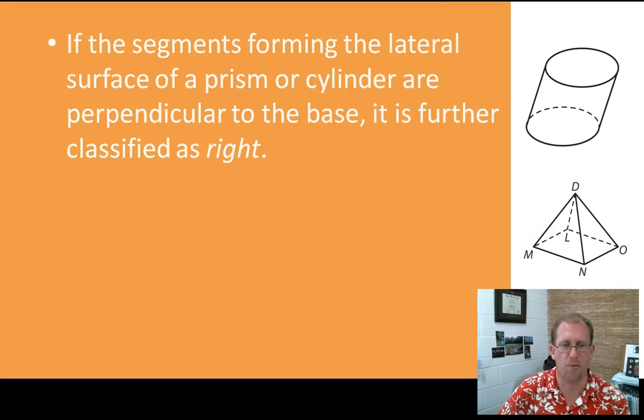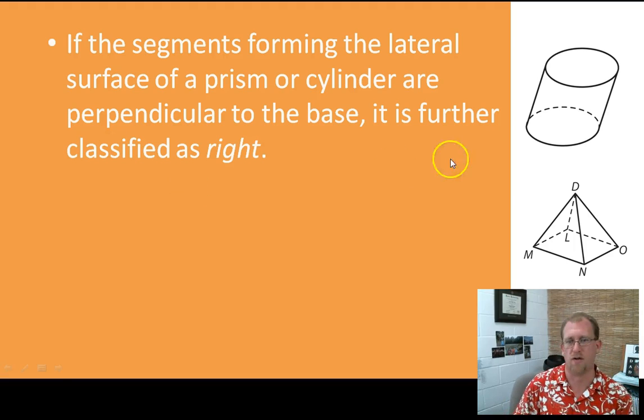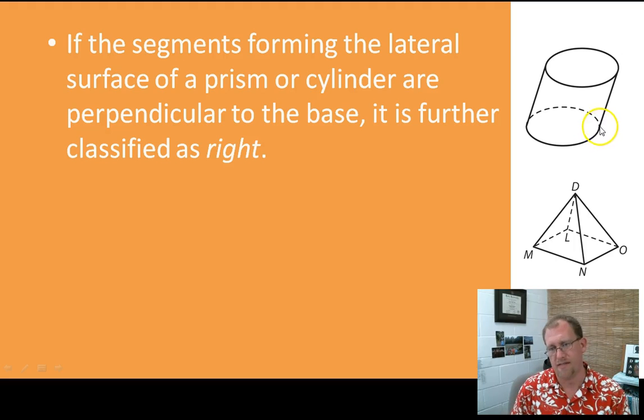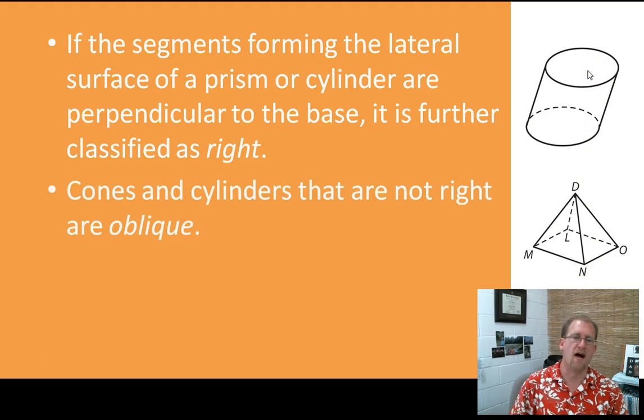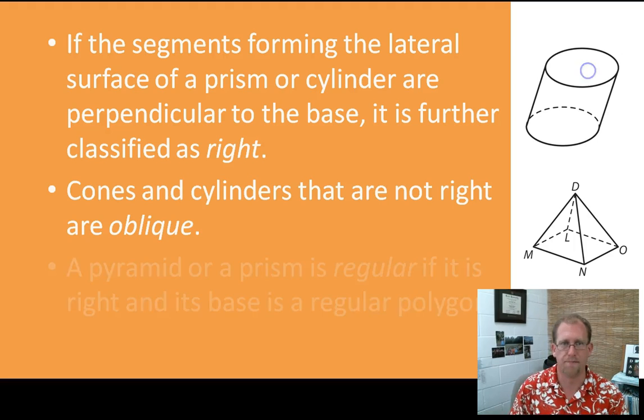If the segments forming the lateral surface of a prism or cylinder are perpendicular to the base, then we call it a right prism or a right cone or a right cylinder. So this is not a right cylinder. This is not a 90 degree angle. But this, the point is directly over the center, and I could drop a straight line down and be in the middle of this square. So this is, in fact, a right pyramid. This is not a right cylinder. If it's not right, we call it oblique. Oblique is the word that means not straight up and down, slanty in some way.